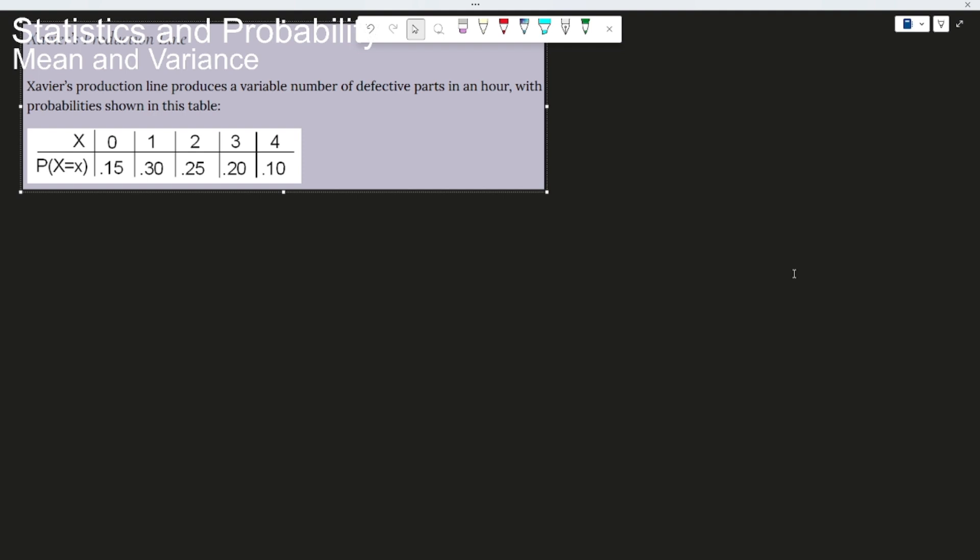So I found this problem on the internet. Savior's production line produces a variable number of defective parts in an hour with probabilities shown in this table. So you have the x's here, which are 0, 1, 2, 3, and 4, those are the values.